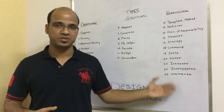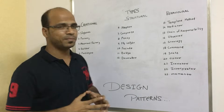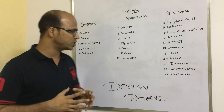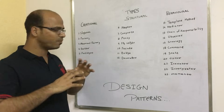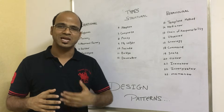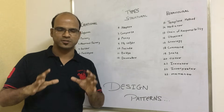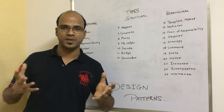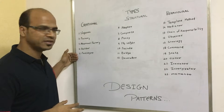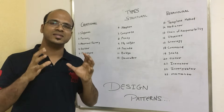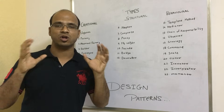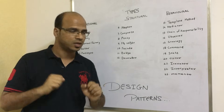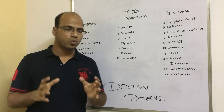We have approximately 23 design patterns — some more exist, but these are the basic ones. Let's start with creational design patterns, which include around five or six patterns. One of my favorites is the Factory pattern, used in Spring Framework and Hibernate. We also have Singleton, which allows you to create only one instance of a class. Creational patterns are all about how to create an object.